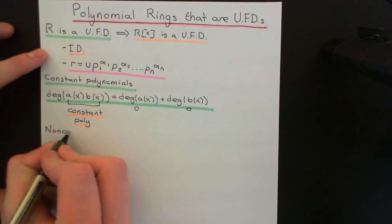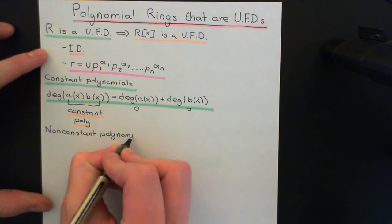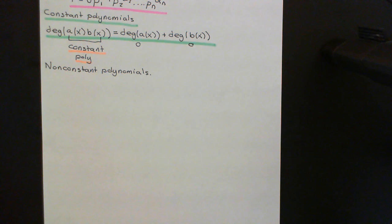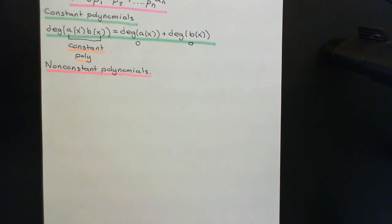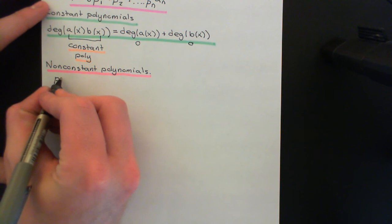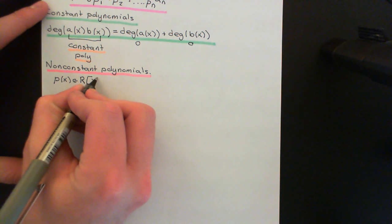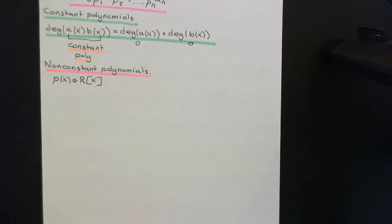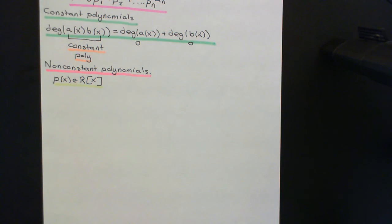Now let's turn our attention to the non-constant polynomials. We want to prove that all non-constant polynomials are going to have a factorization into irreducibles, and that this factorization is going to be unique up to the fact that you can use different associates. Let's take an arbitrary non-constant polynomial called P of X — some element from our ring of polynomials over the unique factorization domain R. We want to show firstly that a factorization into irreducibles exists, and then that it's unique up to different associates.